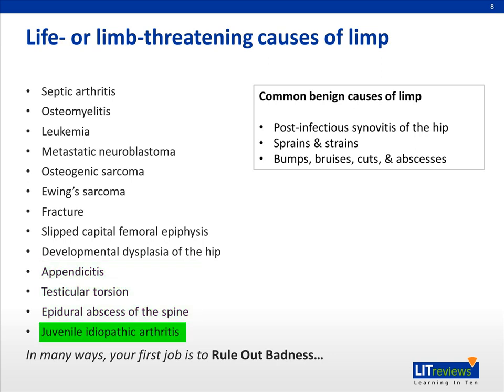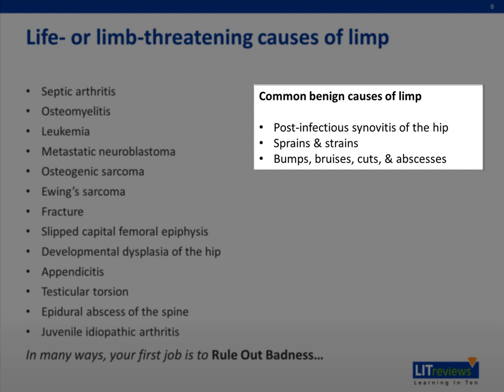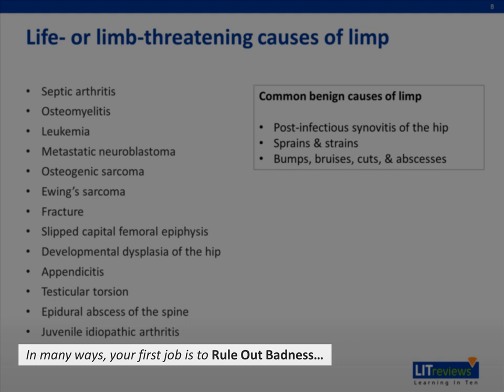Juvenile idiopathic arthritis, or JIA, can also cause pain in one or more joints leading to a limp. The common and much more benign causes of limp include post-infectious synovitis of the hip, which typically occurs in the days to weeks following an upper respiratory infection, simple sprains or strains, as well as bumps, bruises, cuts, or superficial infections like abscesses that cause pain and therefore cause limp. When a child presents with a new limp, your first job is to rule out the bad stuff — the life- and limb-threatening causes — before making a diagnosis of a benign or common cause.